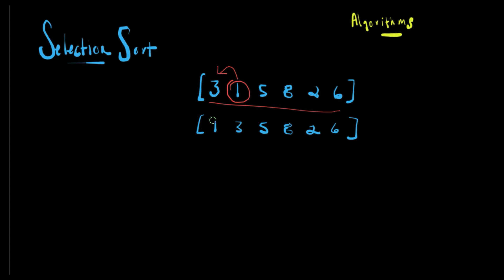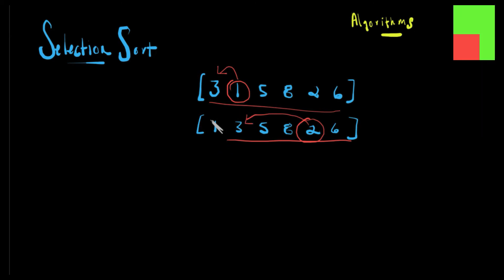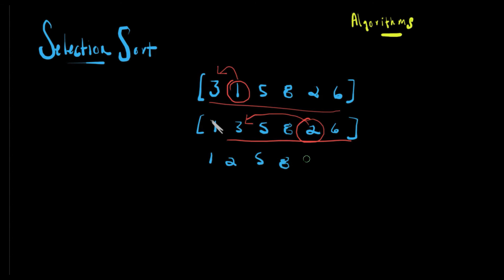We're going to gray out that one because it's considered sorted. We're going to repeat the whole process again — do another linear search, get the smallest value, and then we're going to swap it with the earliest value in the array, which is going to be three, the second one. So the outcome will be one, two, five, eight, three, six.